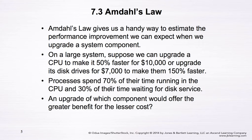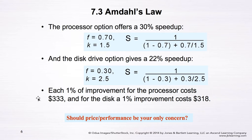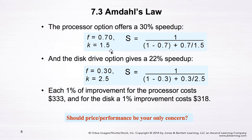Using that information, we can apply Amdahl's Law to determine which option is better. For the first option — upgrading the processor — the overall speedup S equals 1 over (1 minus 0.7) plus (0.7 divided by 1.5), since the new CPU is 50% faster so k equals 1.5. The result gives a speedup of approximately 1.30, meaning upgrading the processor improves overall system performance by about 30%.